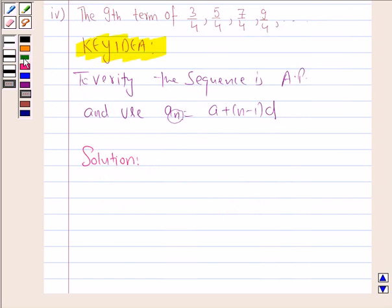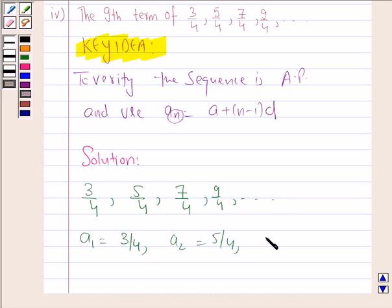We have 3/4, 5/4, 7/4, and 9/4 as the terms of the sequence. So this is a_1, a_2 is 5/4, a_3 is 7/4, and a_4 is 9/4.